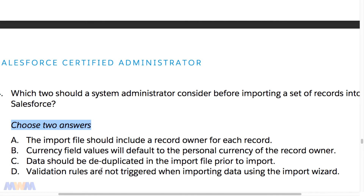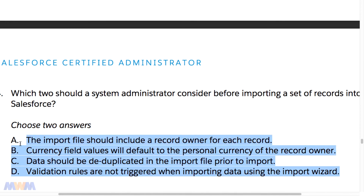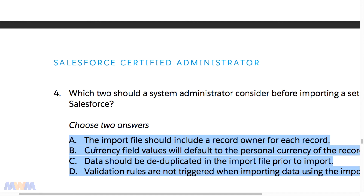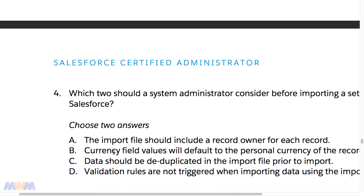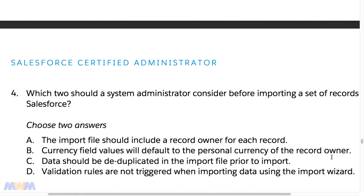Knowing the platform well is key, so I encourage you to do some research alongside these sample questions. This will help you learn the limitations of the platform and confirm the answers for yourself. Do some googling to find out about currency field values and whether they default to the personal currency of the record owner, and find out when validation rules are triggered through the import wizard or the data loader. You want to verify this in your own mind, not just take my word for it or rely solely on the exam guide answer key.